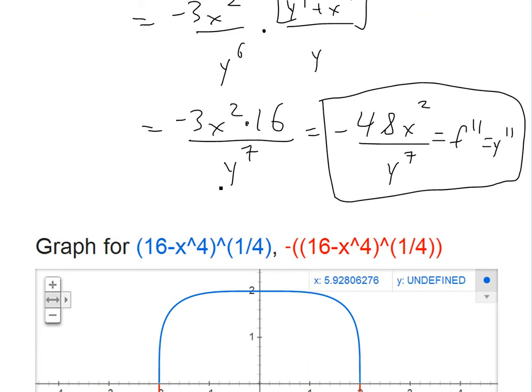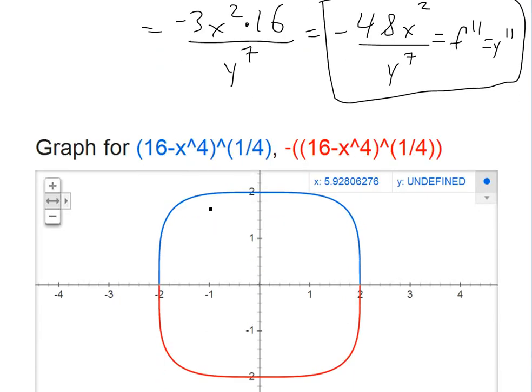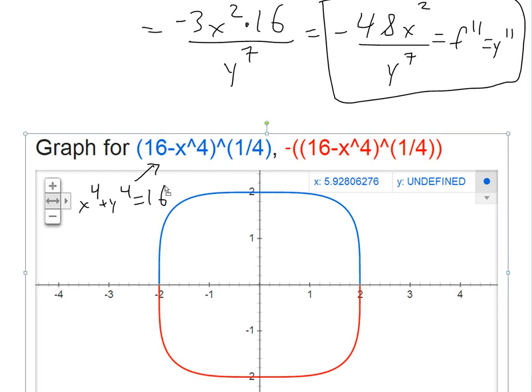Now just a side note to understand the function we were graphing, this function is a two-part function. This is just basically solving, it's like a fat circle. Basically this is just x^4 + y^4 = 16, and then the top part is this one right here, and the bottom is the negative of that.